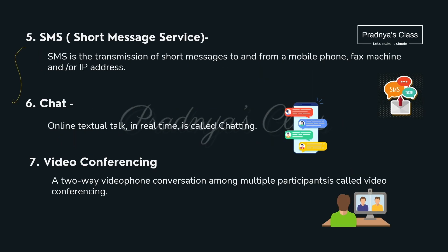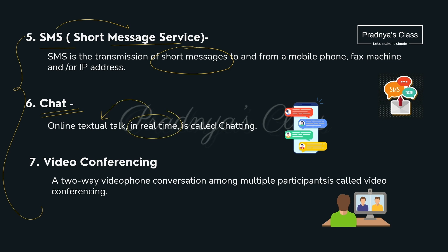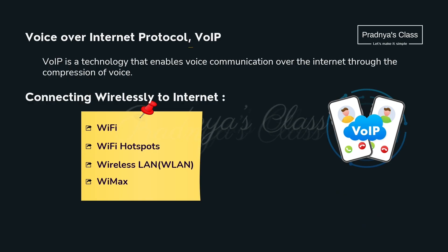Here are some other communication options. SMS, Short Message Service, through which we can send or receive short messages. The second is chat, where we can send textual messages in real time. Third is video conferencing, a two-way video phone conversation with multiple participants. There is also VoIP, Voice over Internet Protocol, with which we communicate through voice — just like a WhatsApp call.